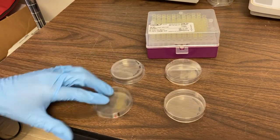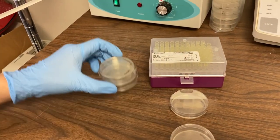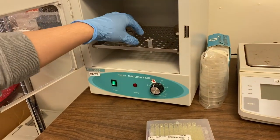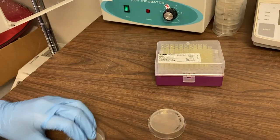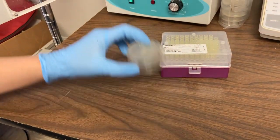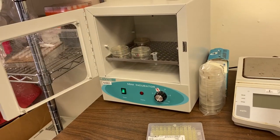Next, we'll turn the plates over and put them into a 37 degrees Celsius incubator. And we're going to leave them there overnight. When we come back, we'll be able to look at the results from our bacterial transformation.